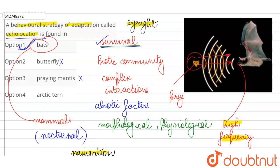The butterfly, praying mantis, arctic tern, none of these animals are going to show such echolocation and it is characteristic of the bats. So Option A is our correct answer.